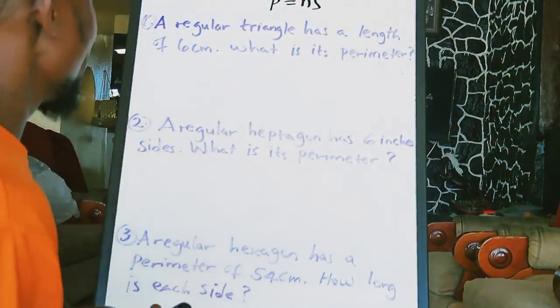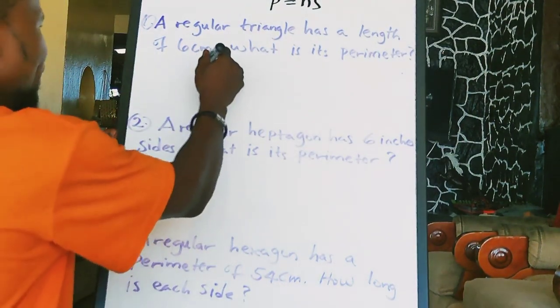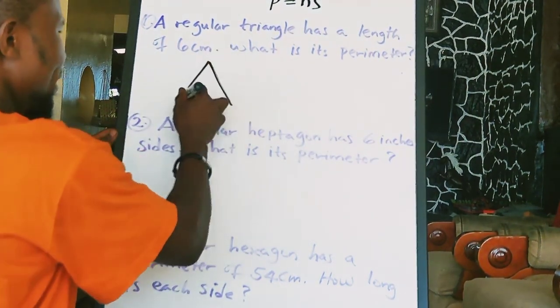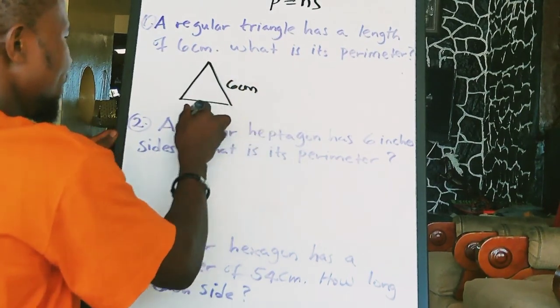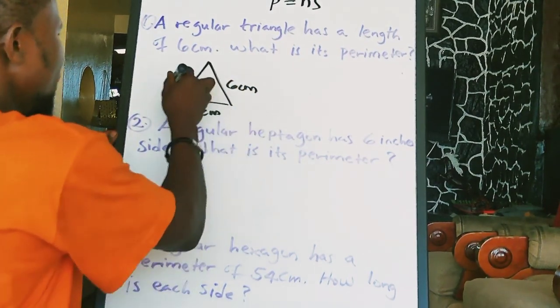So we have here a triangle. This is a diagram of a triangle here. It means this is 6 cm, 6 cm, 6 cm.